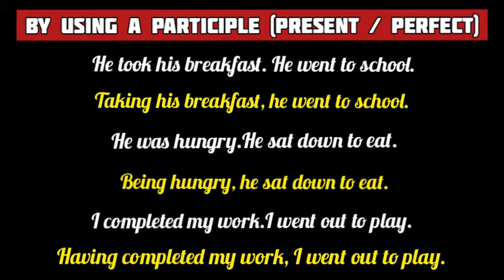If a simple sentence has any form of verb 'be' like am, is, are, was, were, etc., we use the present participle of verb 'be': being. For example, 'he was hungry' and 'he sat down to eat' are the two separate simple sentences. Being hungry, he sat down to eat.